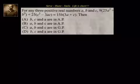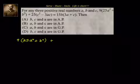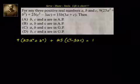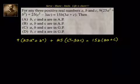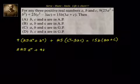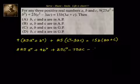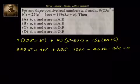Let's write down the given equation: 9 into 25a² plus b² plus 25 into c² minus 3ac equals 15b into 3a plus c. Bringing everything to the left-hand side, it becomes 225a² plus 9b² plus 25c² minus 75ac minus 45ab minus 15bc equals 0.